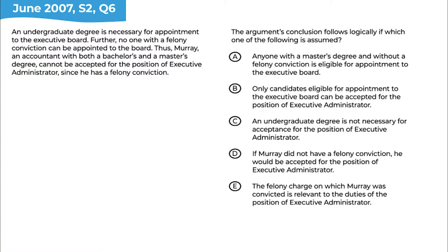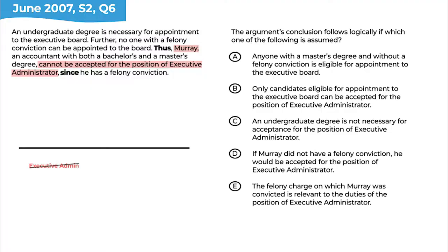Welcome back. The first step is always to find the conclusion, and we can be assisted by language cues that help us find conclusions and premises. In this case, there's a word 'thus' in the last sentence that helps us identify that the conclusion is that Murray cannot be accepted for the position of executive administrator. There's a word 'since' that follows, telling us we're coming back to more evidence. The part that says Murray is 'an accountant with both a bachelor's and a master's degree' is a description, not part of what they're trying to establish.